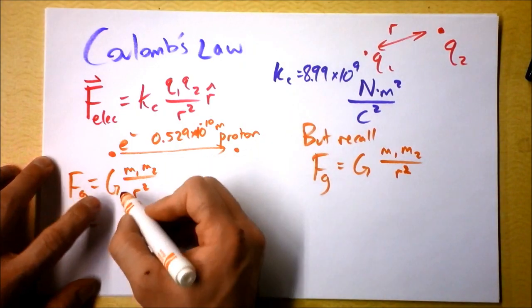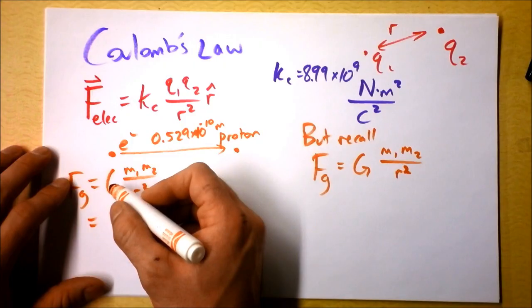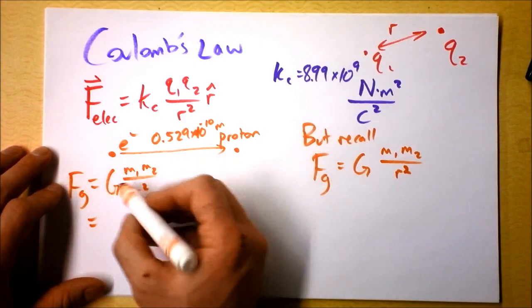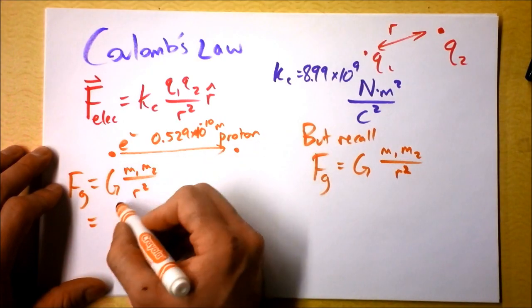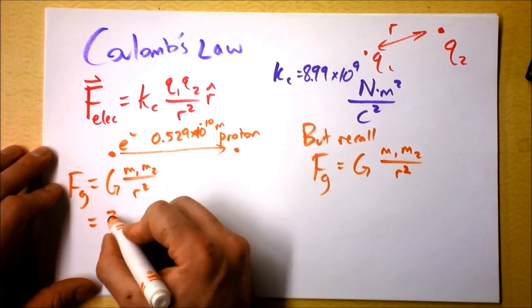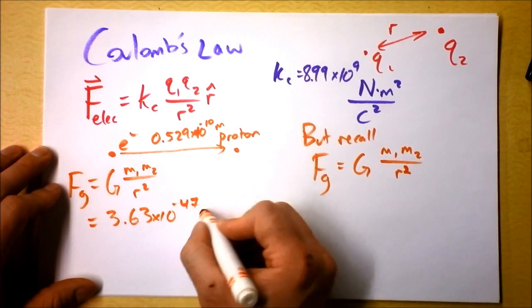And then we'll take that distance and plug it into right here. So, when you run through all that stuff using this 6.67 times 10 to the negative 11th Newton meters squared per kilogram squared, and then you run through all that business right there, I'm getting 3.63 times 10 to the negative 47th Newtons.